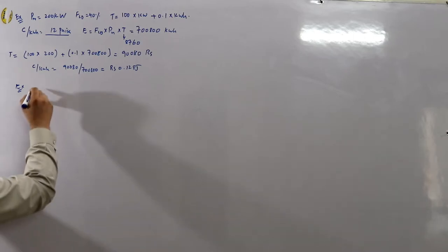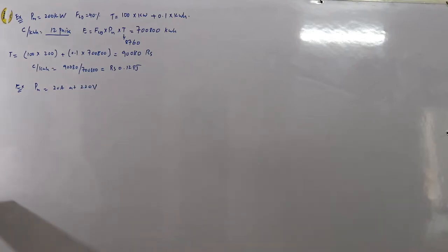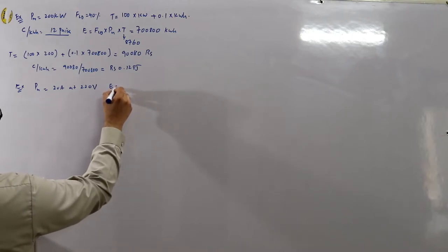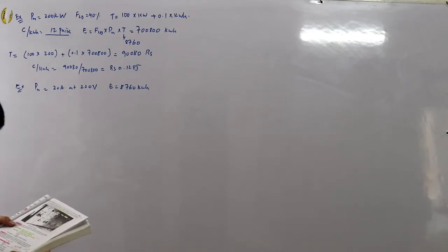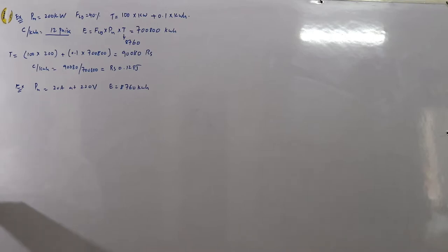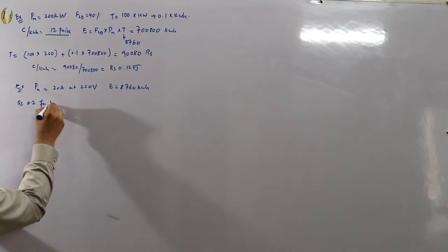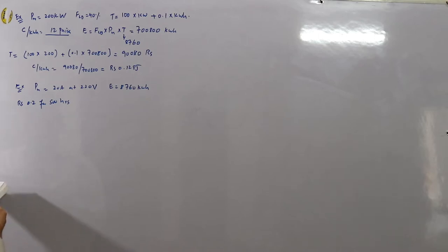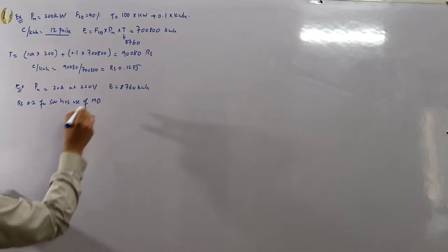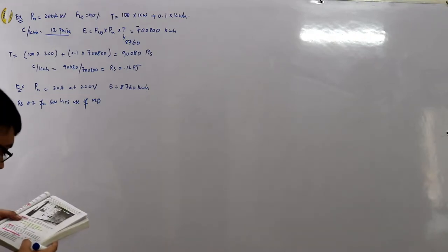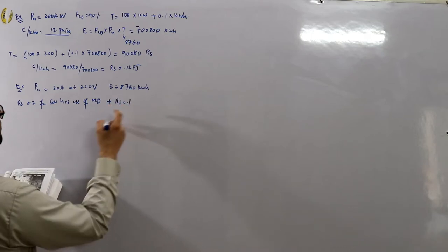Example 5.2: The maximum demand of a consumer is 20 amperes at 220 volts, and his total energy consumption is 8760 kilowatt hours. Energy is charged at 20 paisa (0.2 rupees) per unit for the first 500 hours use of maximum demand, plus 10 paisa (0.1 rupees) per unit for the rest.